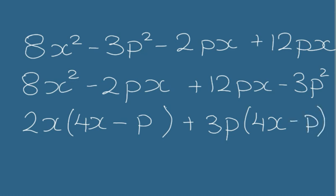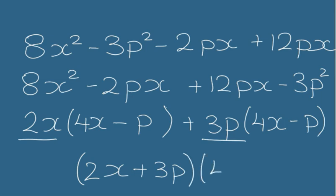Okay, matching brackets. Now group everything together, so the 2x and the 3p will have their own bracket: 2x plus 3p. And secondly then we have 4x minus p. Thank you for watching Maths Plus.